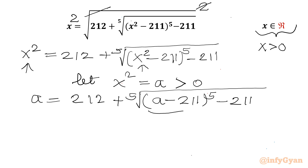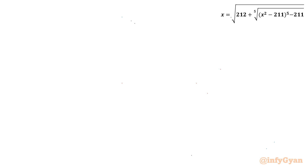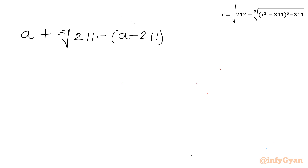I will take minus common from this radicand. So I can write a = 212 − fifth root of (211 − a) whole power 5, minus 211. Now I will take this term to the left hand side, giving a + fifth root of (211 − a) whole power 5 = 211.